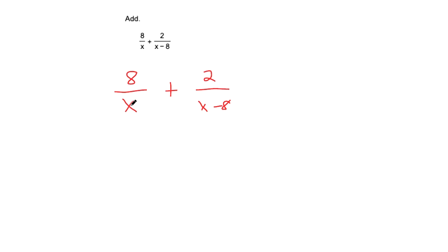So in order to get common denominators, a tool in the tool belt is to multiply the top and the bottom by the opposite fraction's denominator. So the bottom of the other fraction was x minus 8.